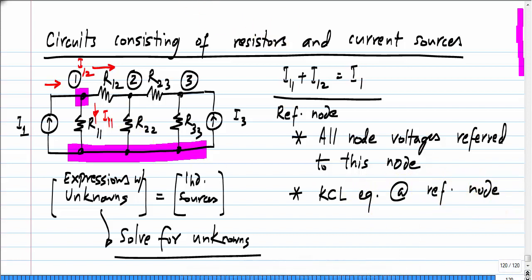So, all node voltages refer to this node and you do not write the KCL equation at the reference node. In our particular circuit, this node at the bottom is the reference node and I have these three variables here V1, V2 and V3. These are the voltages with respect to the reference node. When I say V1, it is with respect to this one. It is the voltage between this node and this reference node.